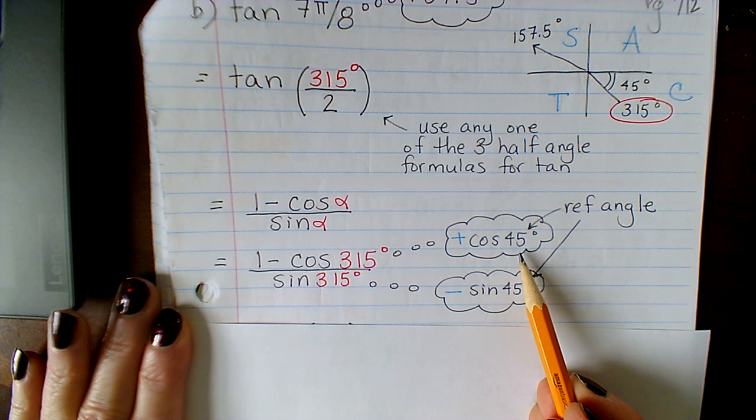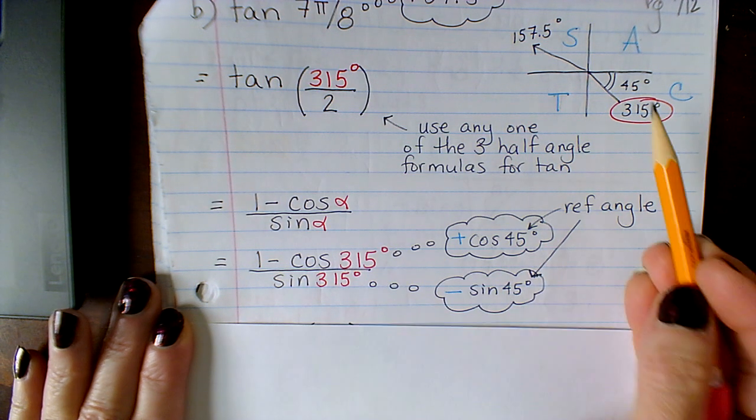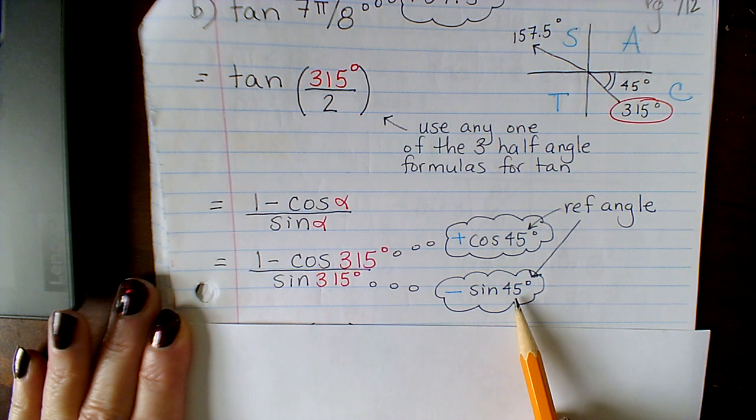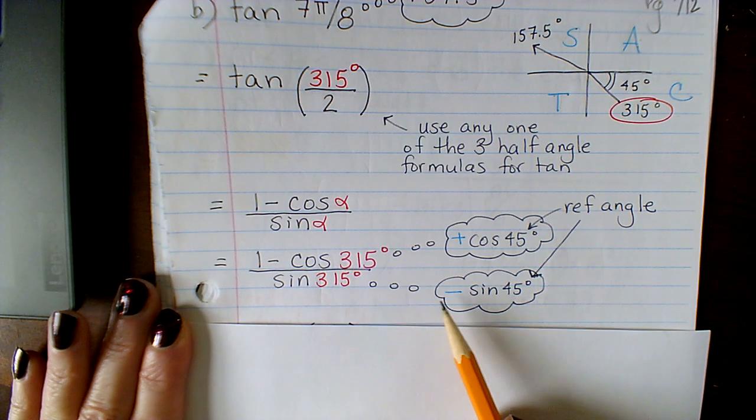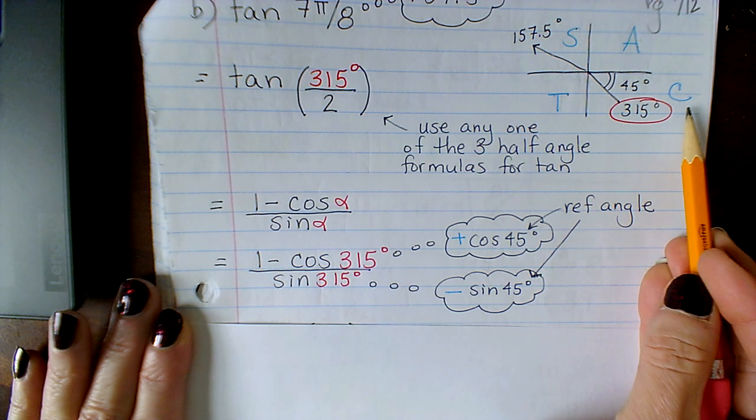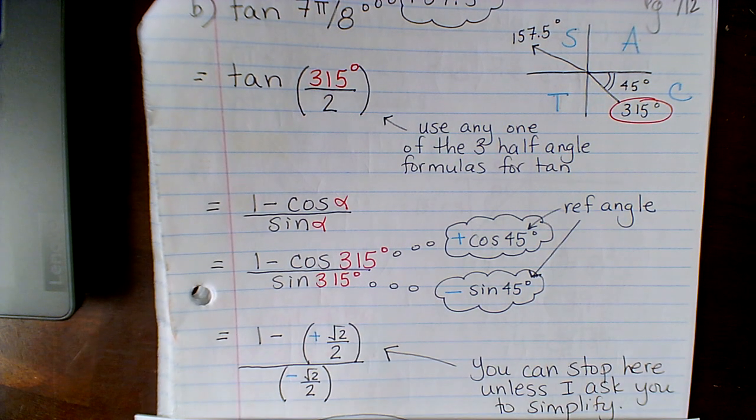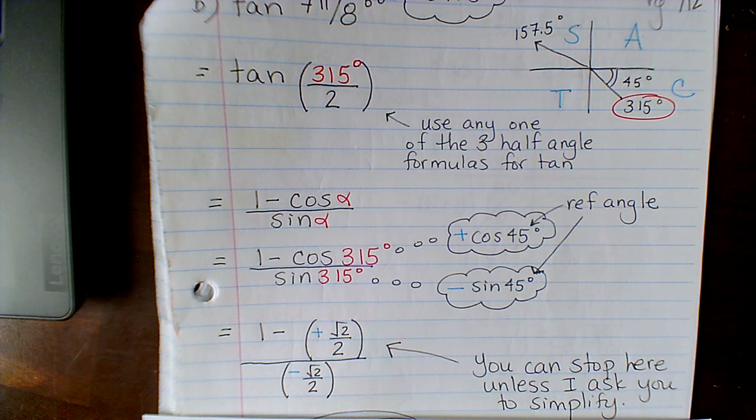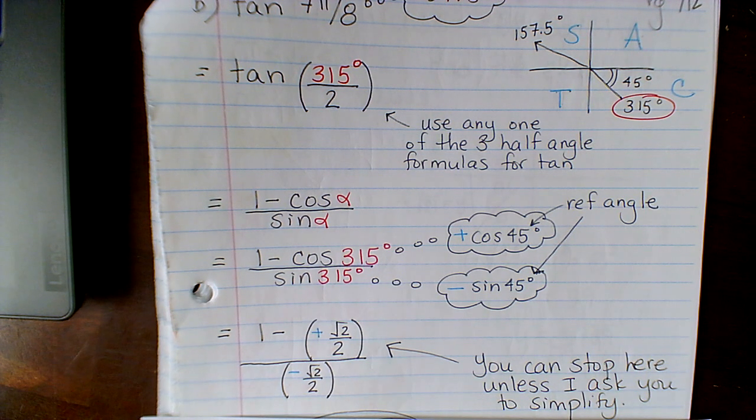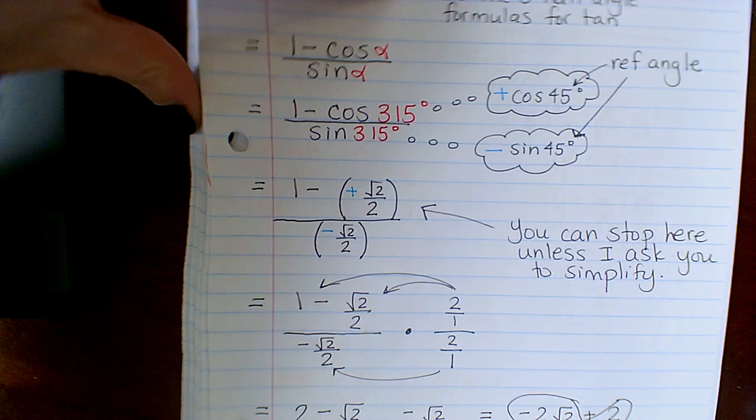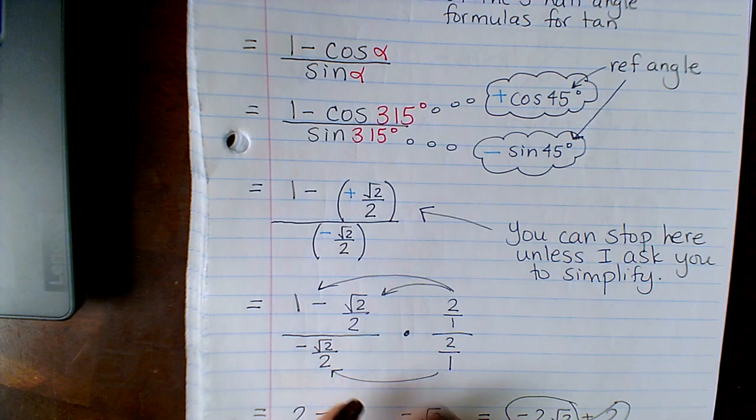Cosine of 45 degrees is root 2 over 2, and it's going to be positive because it's in quadrant 4 where the cosine is positive. Sine of 45 degrees, root 2 over 2, it's going to be negative because in quadrant 4, the sine function is negative. Now, at this point, you could stop here, unless I just happen to ask you on a test to simplify it. But let's just go ahead and see how it all plays out here.